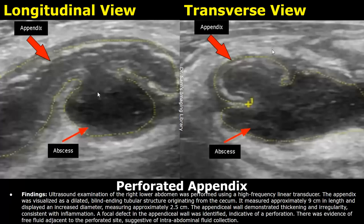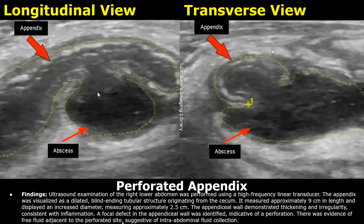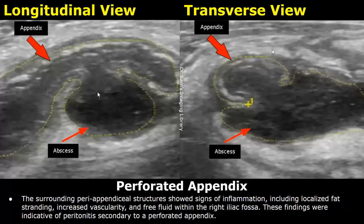Most of the findings are similar to the ones we saw earlier in appendicitis. However, there is a focal defect in the appendiceal wall, indicative of perforation. There was evidence of free fluid adjacent to the perforated site, suggestive of intra-abdominal fluid collection. The peri-appendiceal structures showed signs of inflammation, including localized fat stranding, increased vascularity, and free fluid within the right iliac fossa.